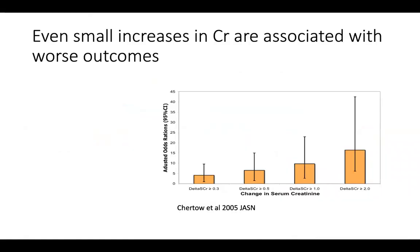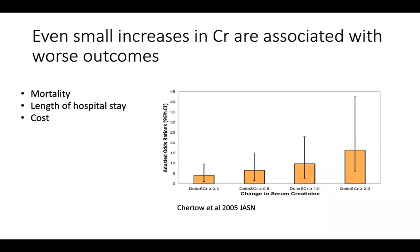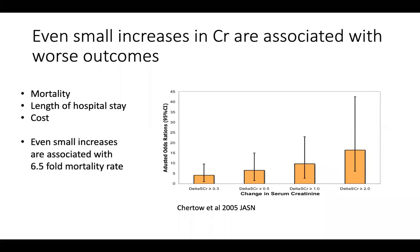This is data from Chertow in 2005. The x-axis shows increases in creatinine — the first bar is a small increase of 0.3, roughly 26 micromol/L, a mild AKI. The y-axis shows outcomes including mortality, hospital length of stay, and cost. Even small increases in creatinine have a significant association with worse outcomes, and as AKI severity worsens, that association exponentially increases — even small blips can be associated with over a six-fold increase in mortality in hospitalized patients.